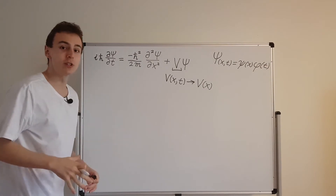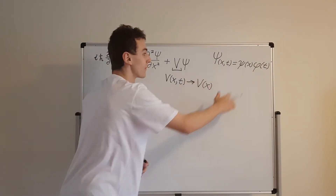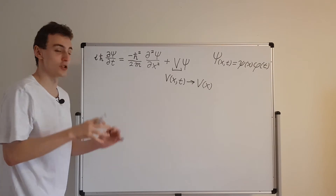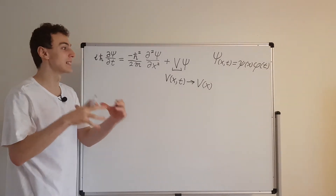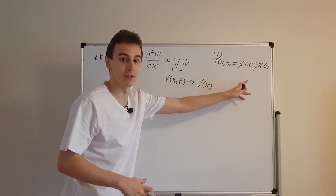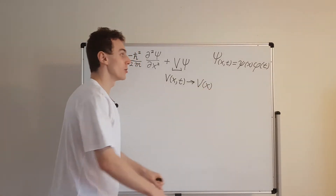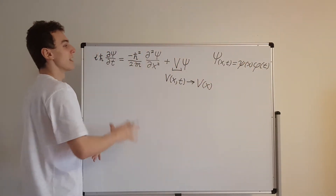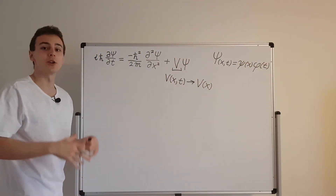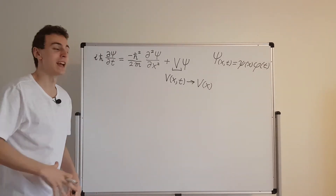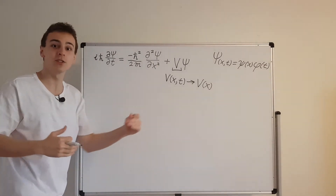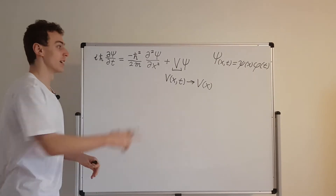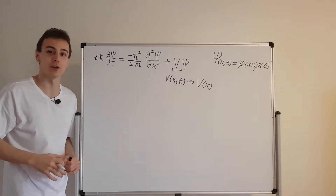Not all solutions are going to be separable, but what you will be able to do is construct any solution from the sum of these types of solutions. So this is what we're going to substitute into the Schrodinger equation, turning it into two ordinary differential equations. After a few videos we'll actually have a general solution to this partial differential equation.